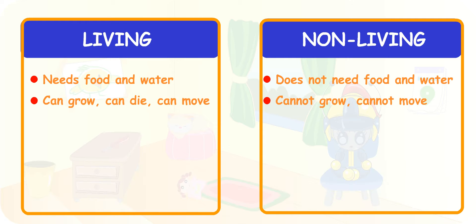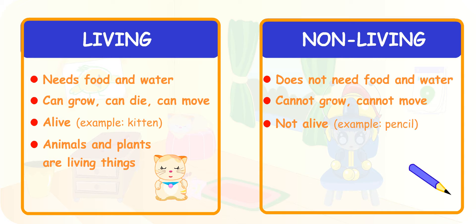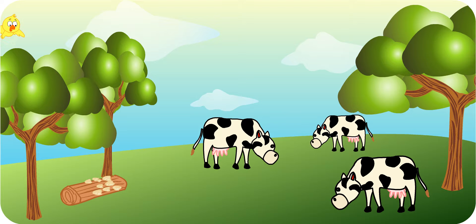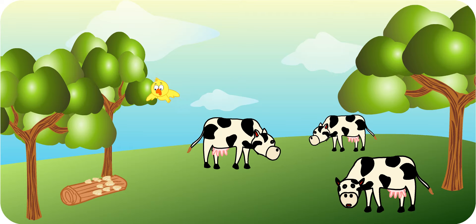Living things are things that are alive. The kitten is an example. Animals and plants are living things. Things that are not alive are non-living things. The pencil is a non-living thing. Now that you are able to identify living things from non-living things, let's move on to more examples.